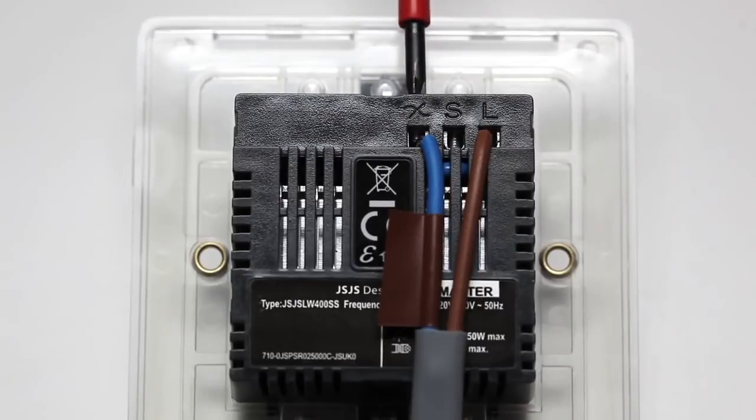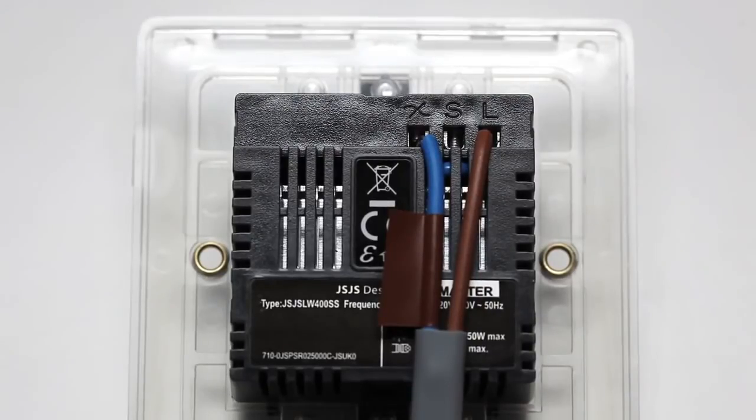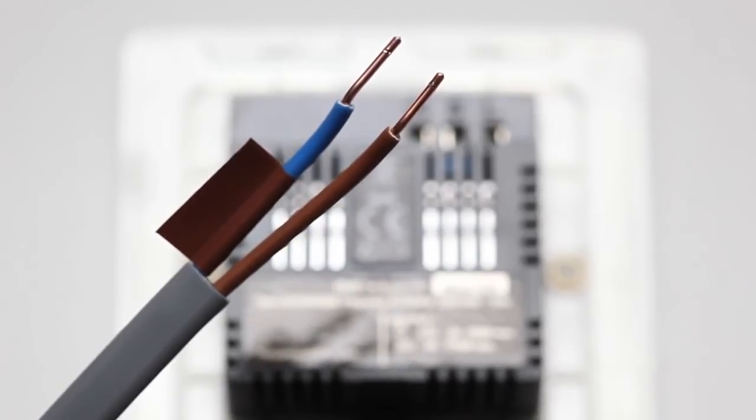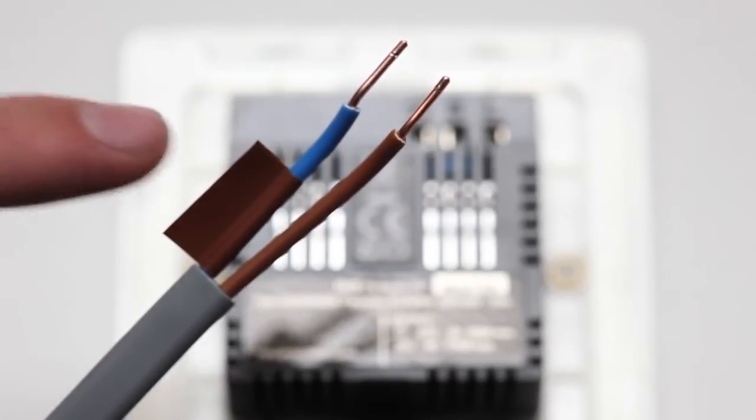Ensure that the terminals are properly tightened and that no bare wire is visible. The LightWave RF dimmer switch doesn't require a mains neutral wire to be connected. It only needs live in and switched live out wires.